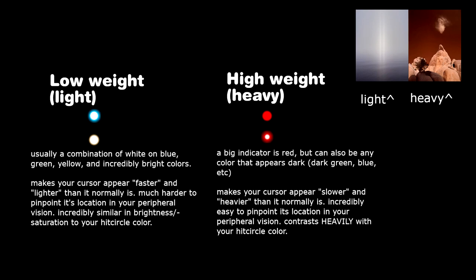These cursors are usually white on blue, white on yellow, white on green, white on any bright color really, and they're pretty blurry, as in the circle creating the cursor is not as sharp as heavy cursors.